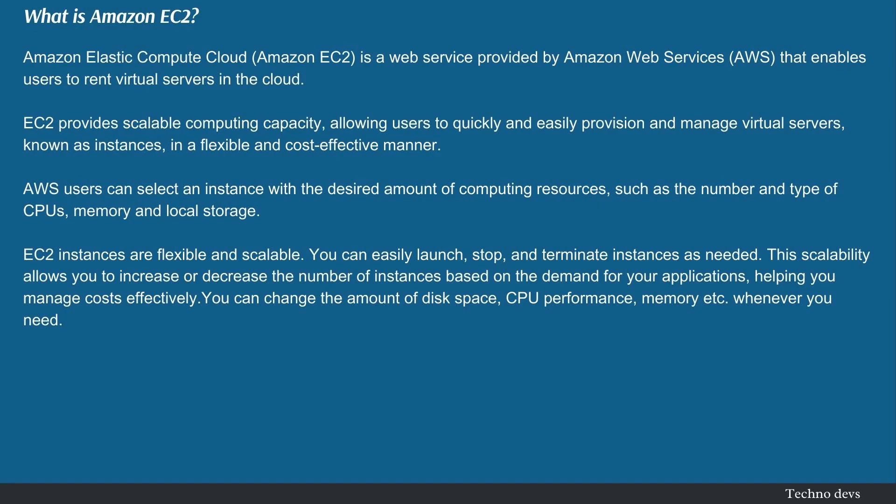What is EC2 instance? Amazon Elastic Compute Cloud, Amazon EC2, is a web service provided by Amazon Web Services that enables users to rent virtual servers in the cloud. EC2 provides scalable computing capacity, allowing users to quickly and easily provision and manage virtual servers, known as instances, in a flexible and cost-effective manner.